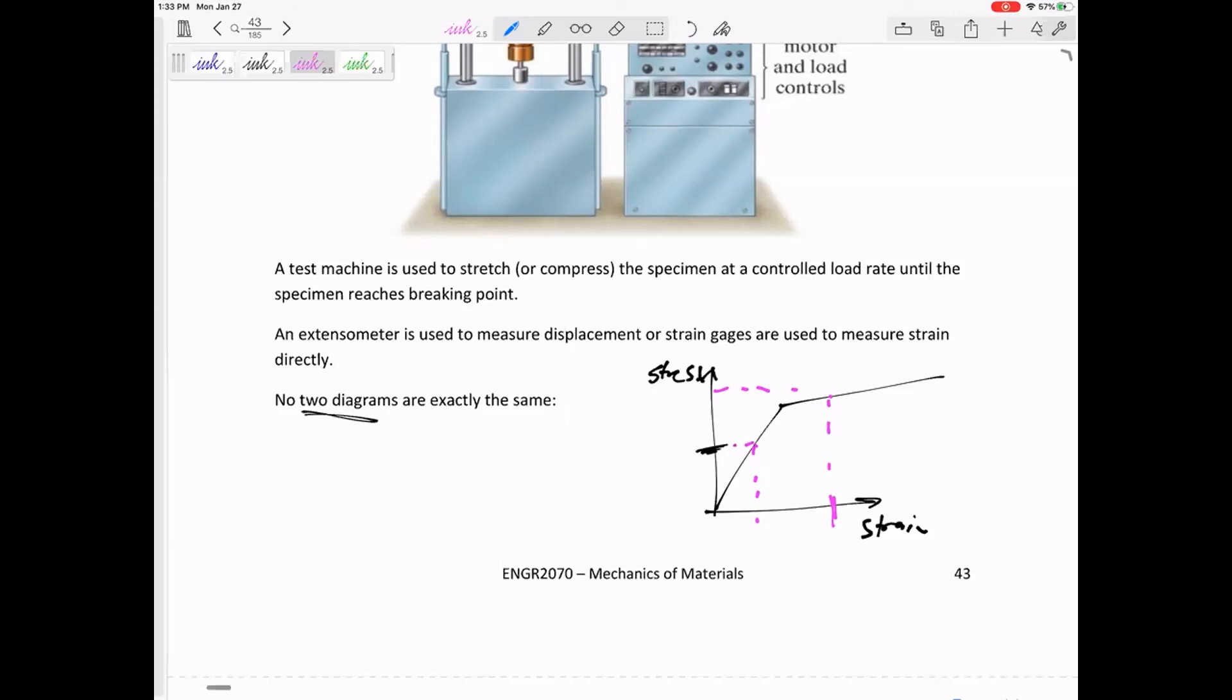And copper is different from steel, they're all different, but if we can look up or if we are given the stress-strain diagram, then if you tell me strain I can tell you stress, or if you tell me stress I can tell you strain.